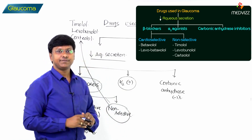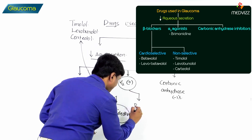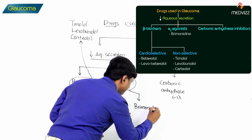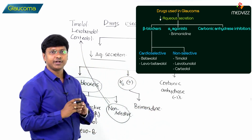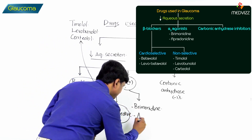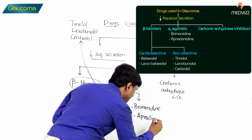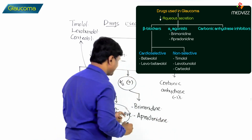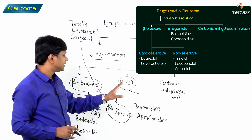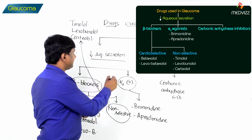Now the alpha-2 agonists — they include brimonidine and apraclonidine. These drugs act by stimulating the alpha-2 receptors and thereby decrease the aqueous humor production.